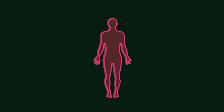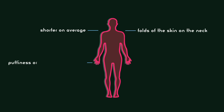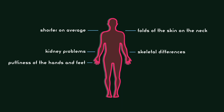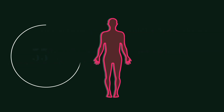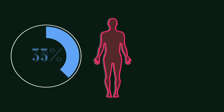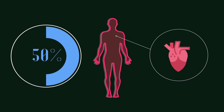For instance, females with Turner's tend to be shorter than their 46XX female counterparts. They may have extra folds of skin on the neck, puffiness or swelling of the hands and feet, skeletal differences, and kidney problems. One-third to one-half of affected females are born with heart defects, the complications of which can be life-threatening.